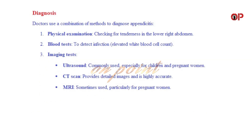Diagnosis. Doctors use a combination of methods to diagnose appendicitis: 1. Physical examination — checking for tenderness in the lower right abdomen. 2. Blood tests — to detect infection and elevated white blood cell count. 3. Imaging tests — ultrasound, commonly used especially for children and pregnant women; CT scan, which provides detailed images and is highly accurate; and MRI, sometimes used particularly for pregnant women.